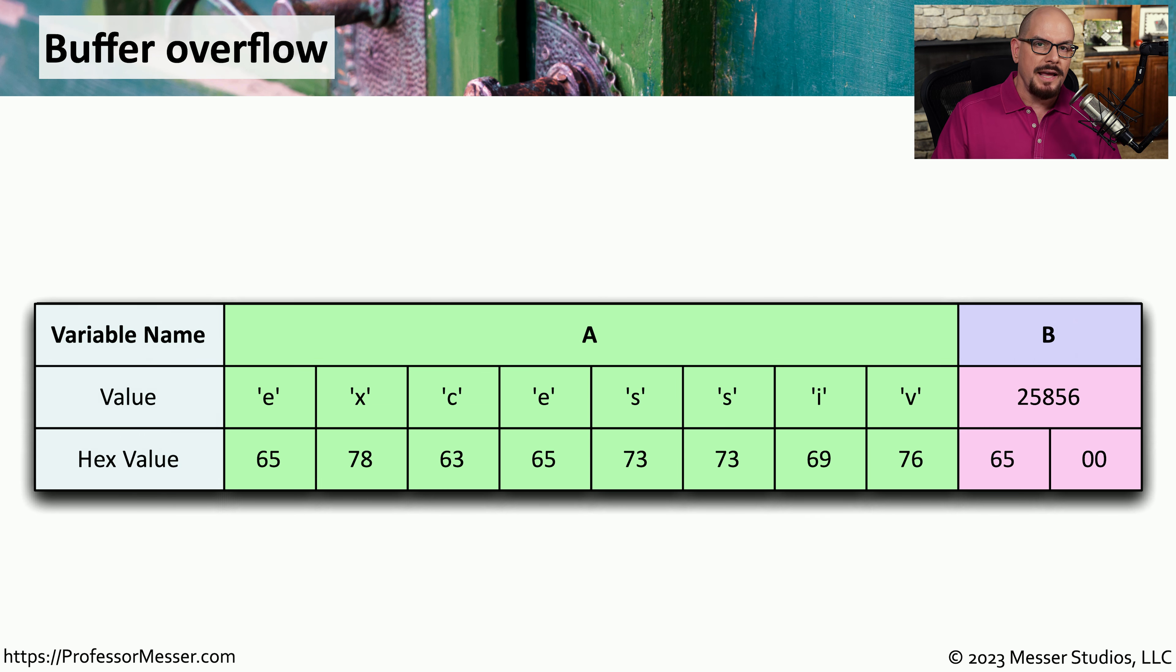In this example, the attacker has chosen to store the word excessive into variable A. But excessive has nine characters. The first eight characters are stored as part of variable A.